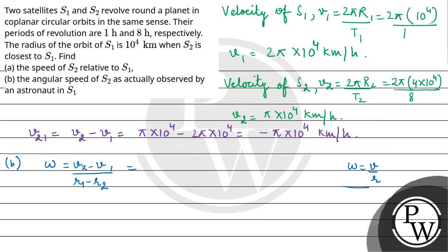V2 - V1 = -π × 10^4, and the distance between them is R2 - R1 = 4 × 10^4 - 10^4 = 3 × 10^4. So ω = -π × 10^4 / (-3 × 10^4).